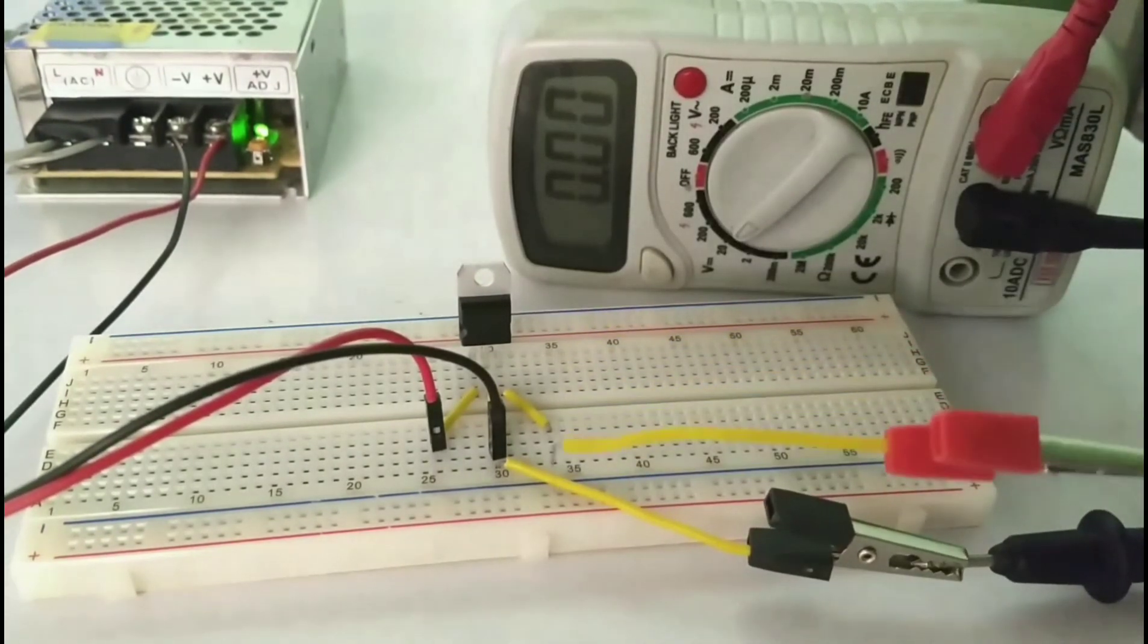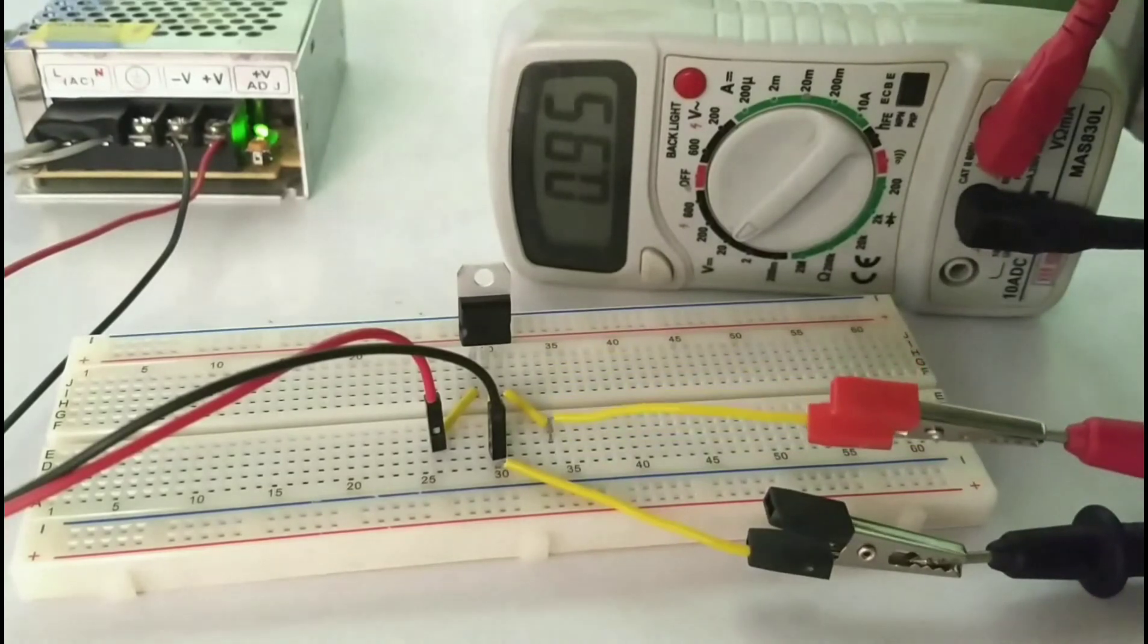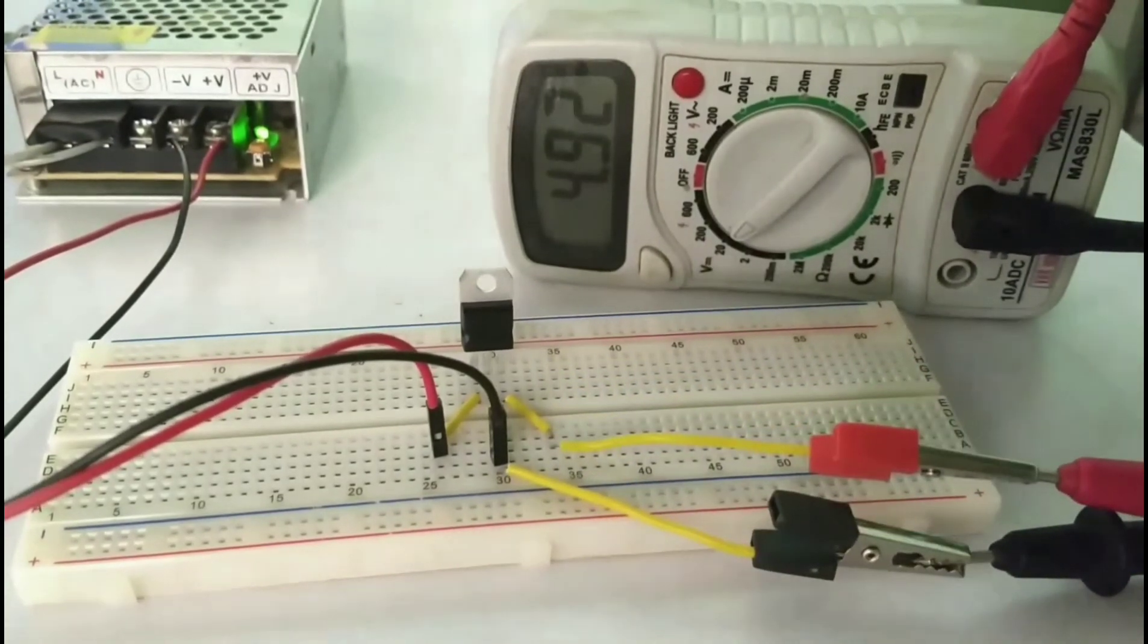Since it is a 7805 IC, this should give about 5 volts at the output. Just as expected, about 4.9 volts is obtained at the output.